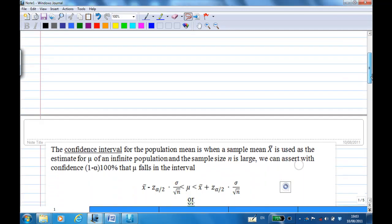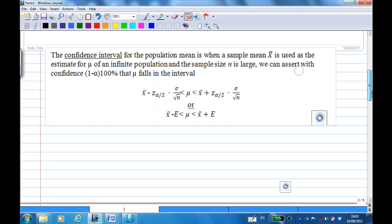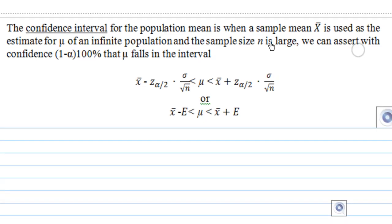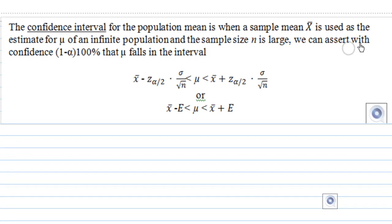For this we recall the lecture notes there. The confidence interval for the population mean is when a sample mean x bar is used as the estimate for mu of an infinite population and the sample size n is large.